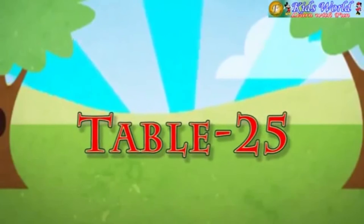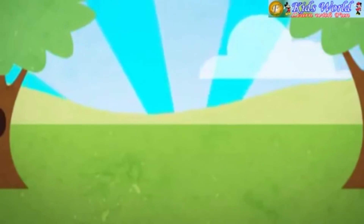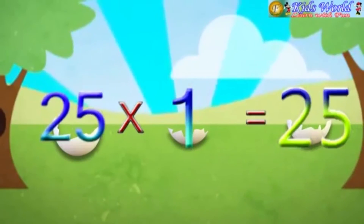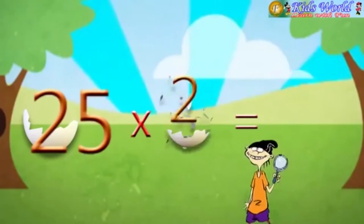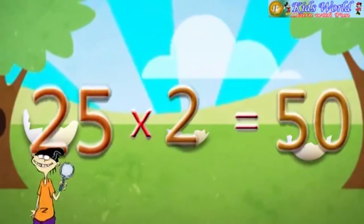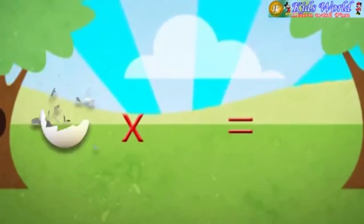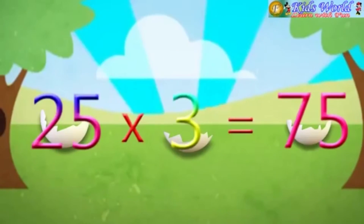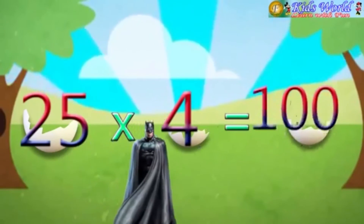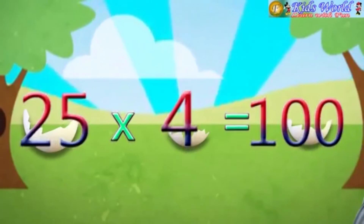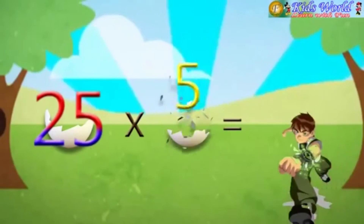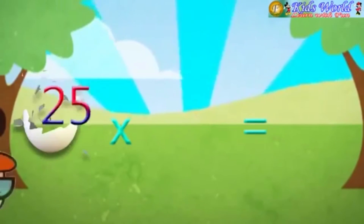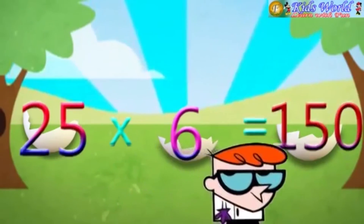Table 25. 25 into 1 is equal to 25. 25 into 2 is equal to 50. 25 into 3 is equal to 75. 25 into 4 is equal to 100. 25 into 5 is equal to 125. 25 into 6 is equal to 150.